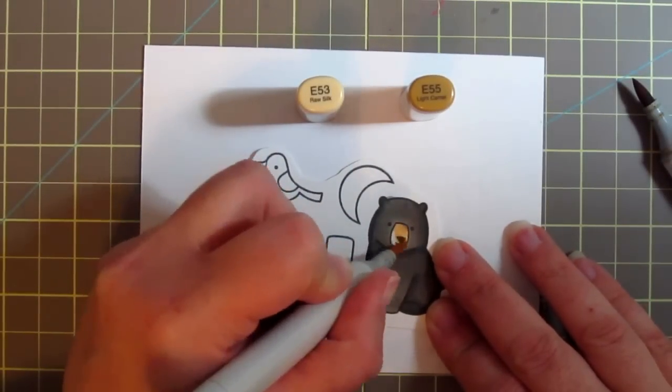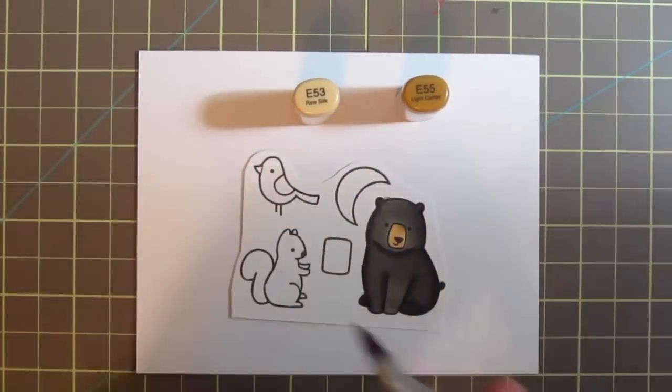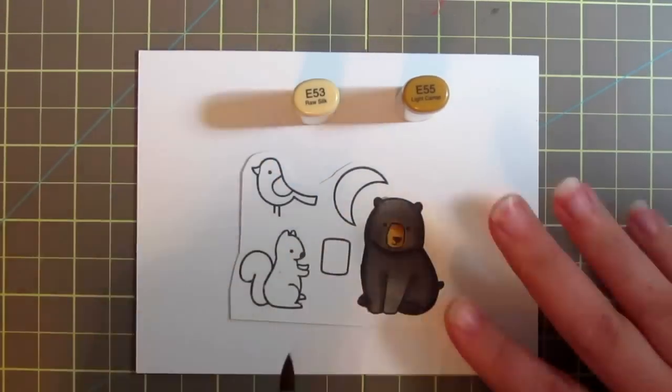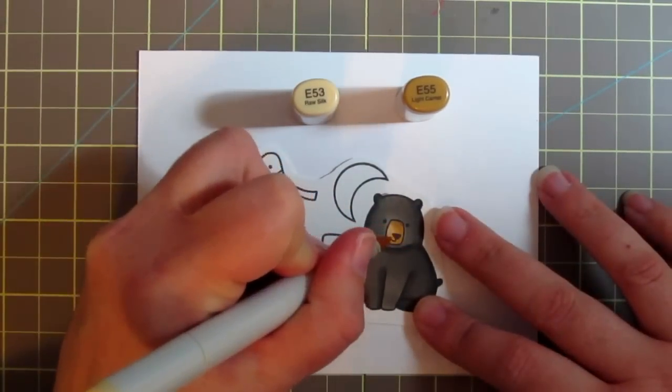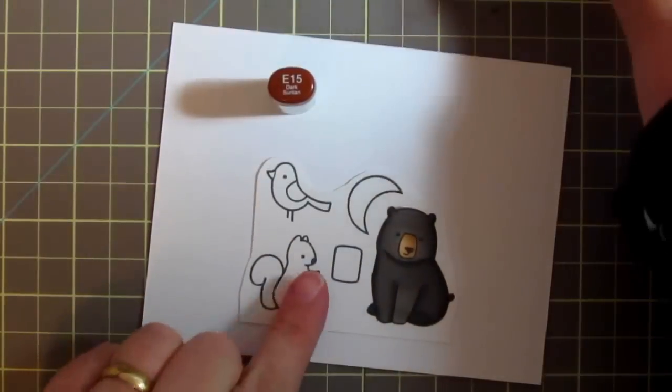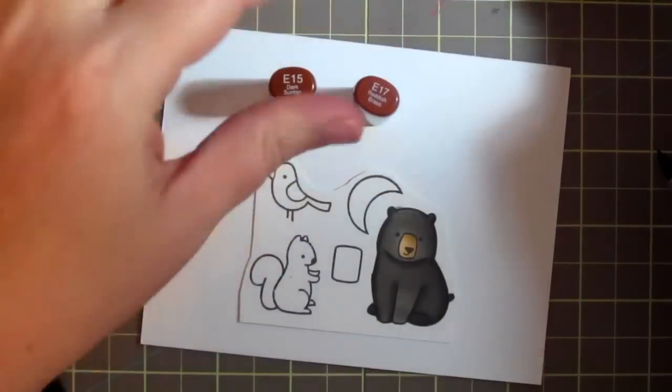I'm just going to color in his little muzzle now with some E53 and a little bit of E55 just for a little bit of shadow, blend that back in, and then I'm going to move on to my squirrel. I wanted the squirrel to be a red squirrel.